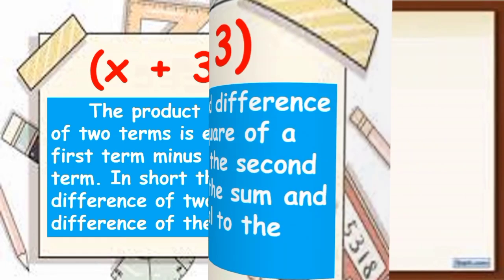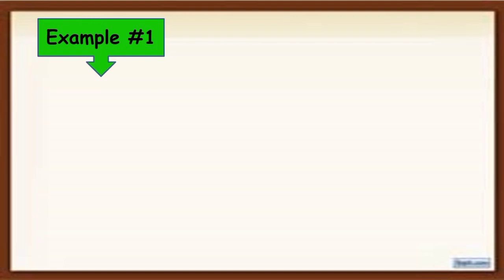To understand it further, let's have example number one. For example, we have (x + 3)(x - 3). As you can see, you are going to square the first term minus the square of the second term.